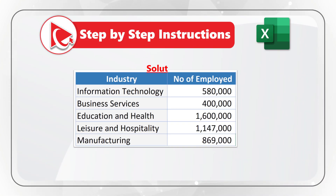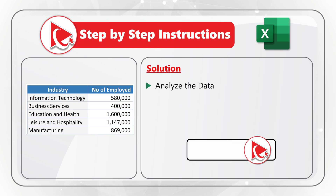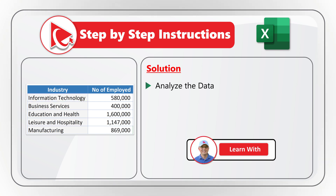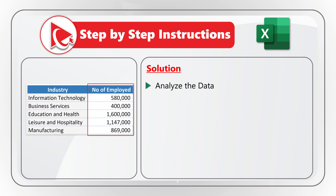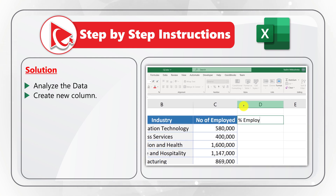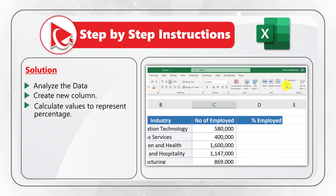Here are step-by-step instructions on how to solve this on the test. First, analyze the data — we have information technology, business services, education and health, leisure and hospitality, and manufacturing, along with the number of employed people in each industry. To calculate the percentage of employed people using conditional formatting with data bars, we create a new column, format the title to match the other column titles, then calculate the values representing the percentage of employed people using the SUM formula.